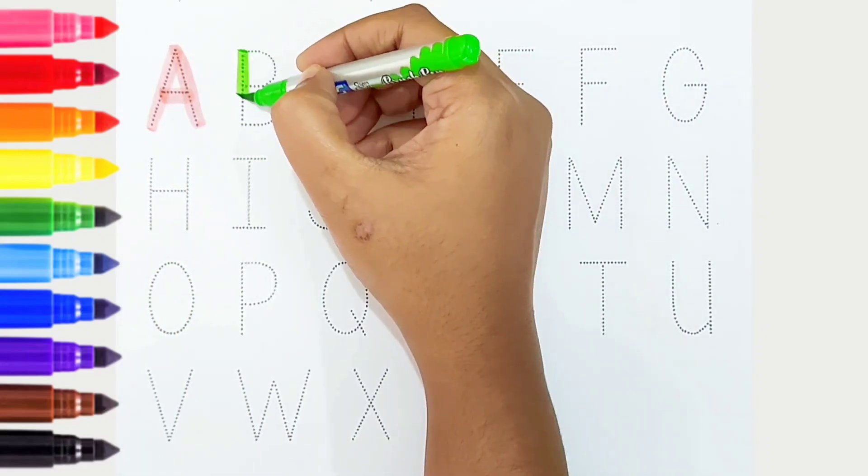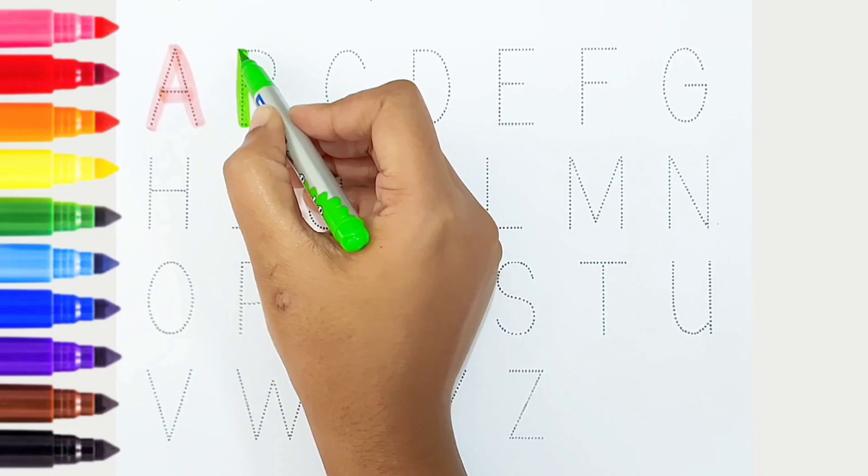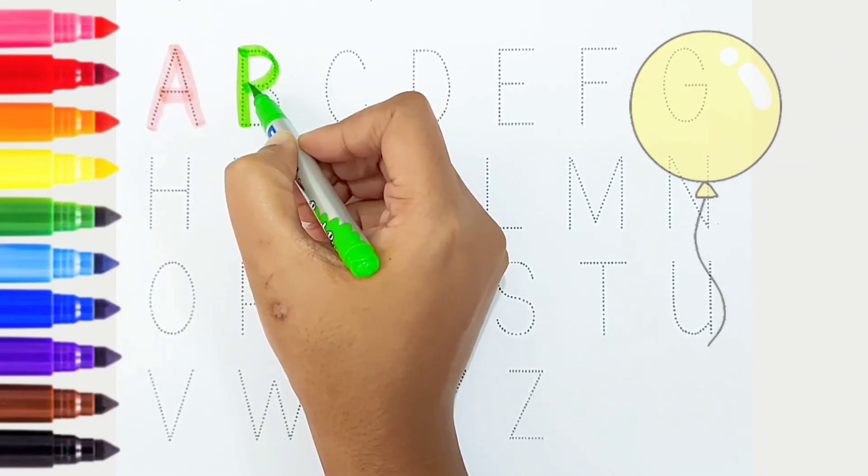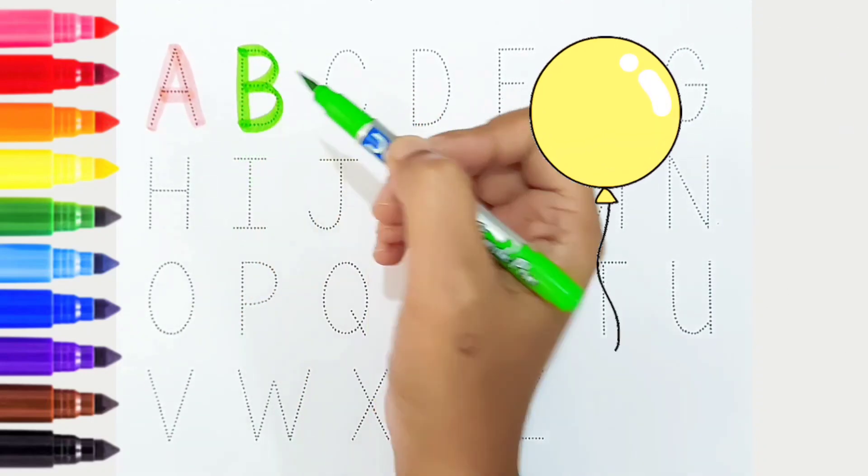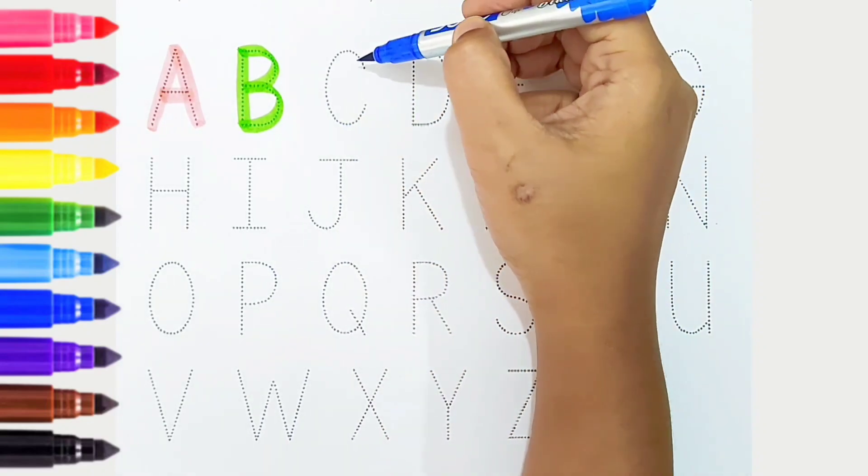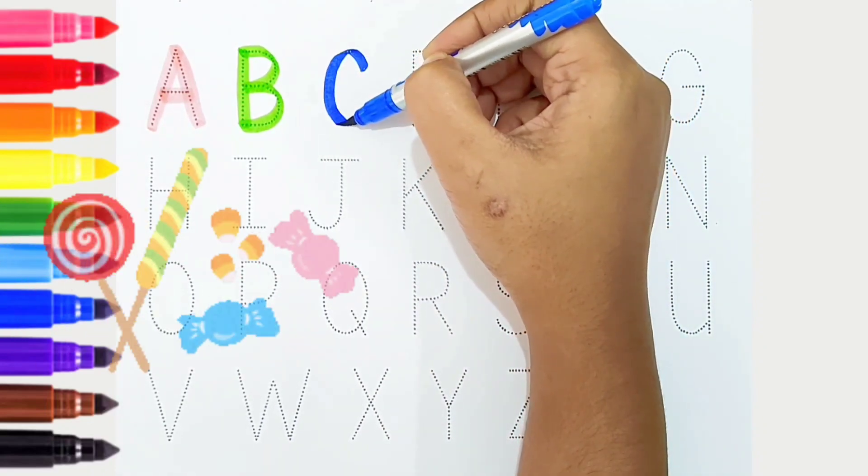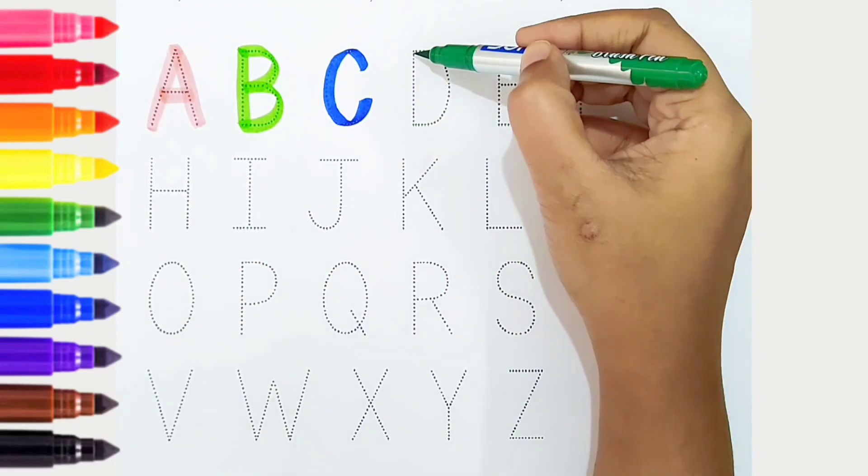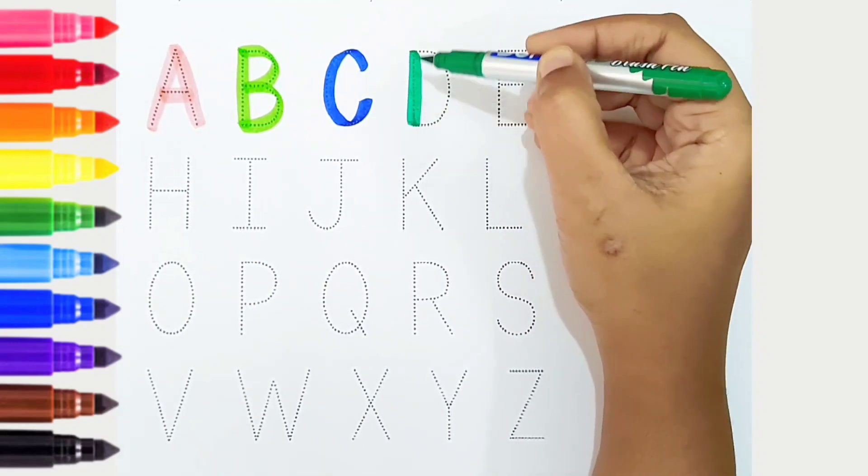B, light green color, is for balloon. C, dark blue color, is for candy. D, dark green color.